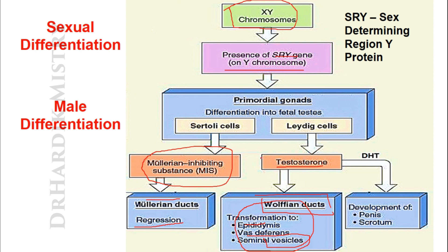Testosterone is then converted to dihydrotestosterone (DHT), which causes the development of the penis and scrotum. That is how male sexual differentiation takes place.